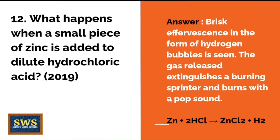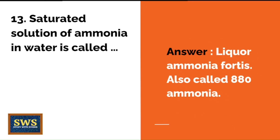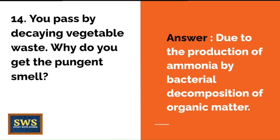What happens when a small piece of zinc is added to dilute hydrochloric acid? — from the 2019 question paper. It results in brisk effervescence in the form of hydrogen bubbles; the gas released extinguishes a burning splint and burns with a pop sound. A saturated solution of ammonia in water is called liquor ammonia fortis, also called 880 ammonia.